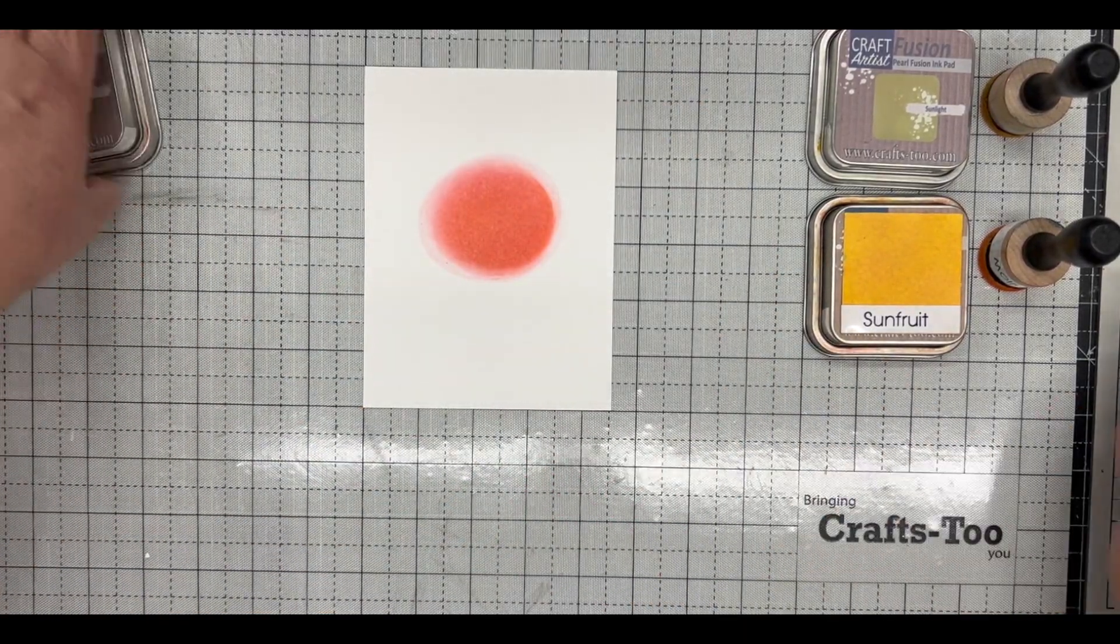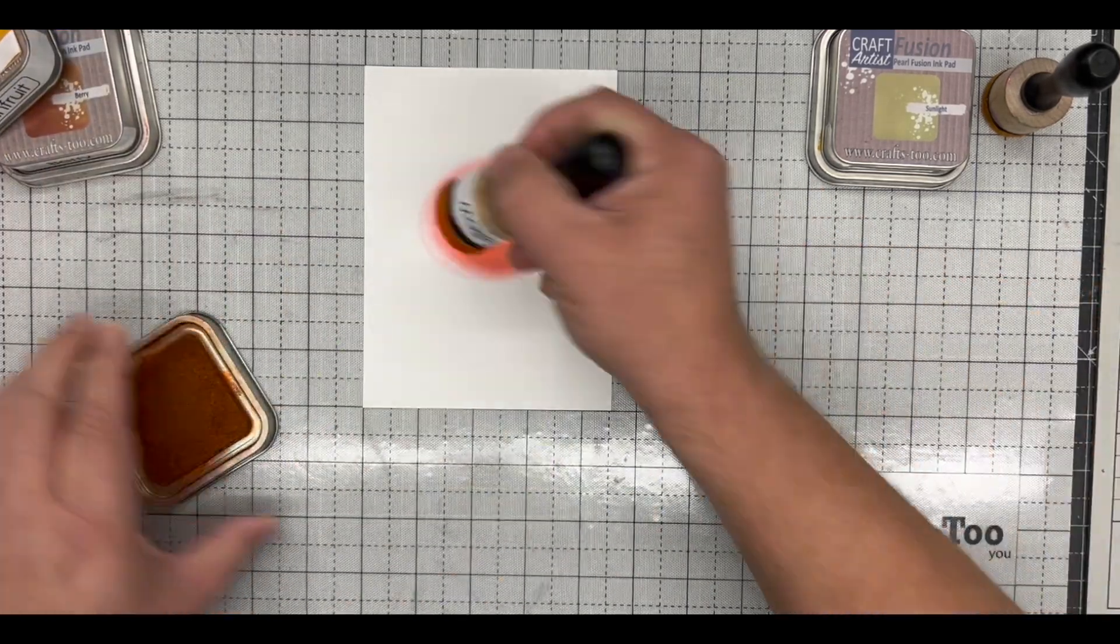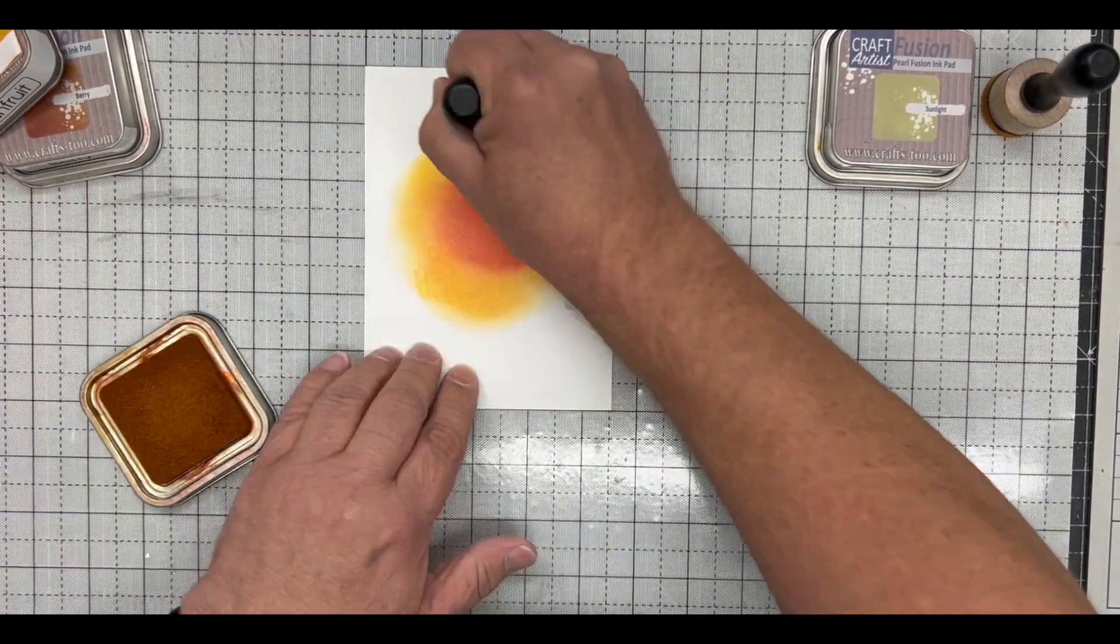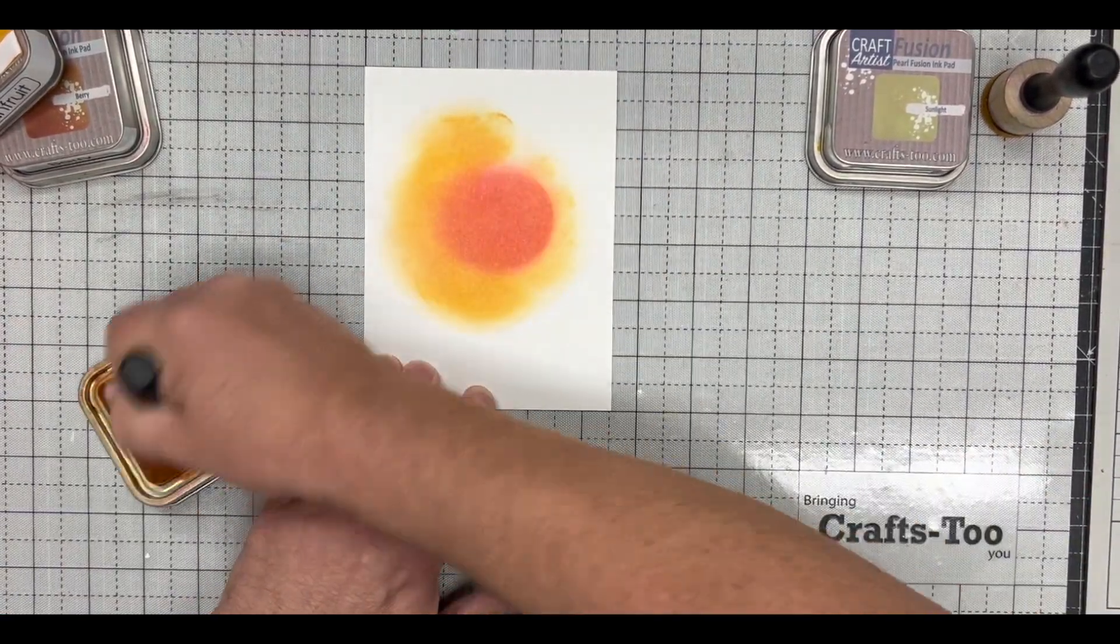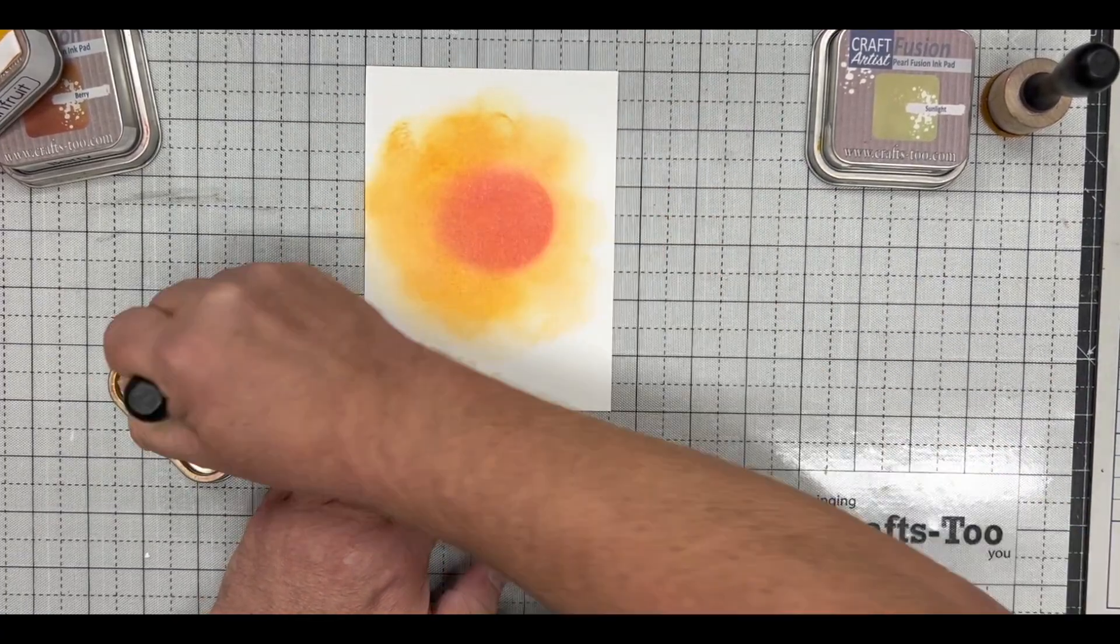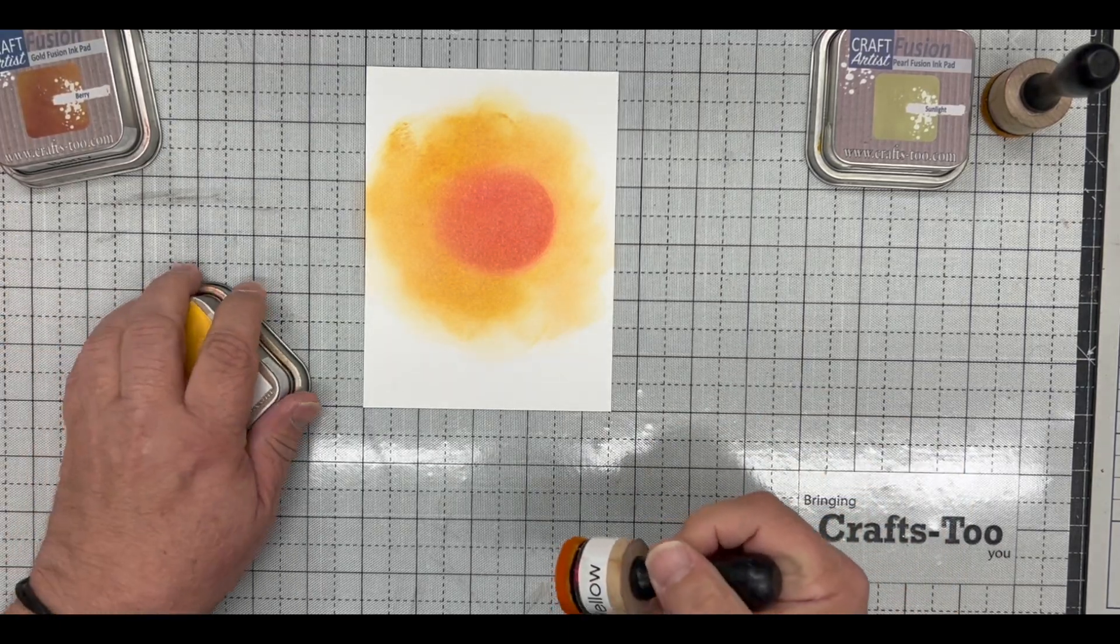I'm then going to go with sun fruit, which again is from the Gold Fusion range, and simply blend that around. You don't need to get a perfect blend as we're going to cover this over, so I'm just going roughly around with a little bit of this orangey color.